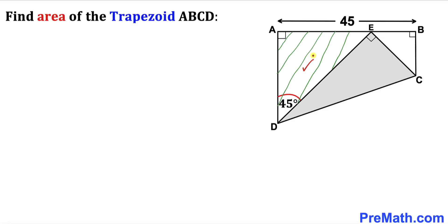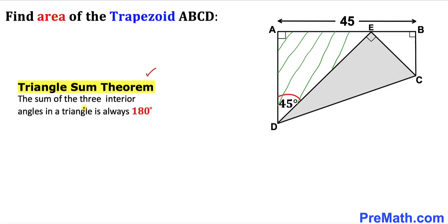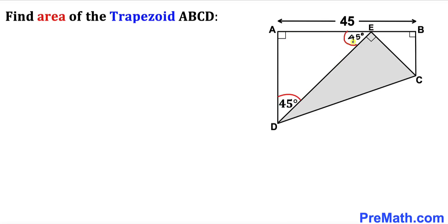Our first step is to focus on right triangle ADE. Recalling the triangle sum theorem — the sum of the three interior angles in a triangle is always 180 degrees — since one angle is 90 degrees and angle ADE is 45 degrees, the third angle must also be 45 degrees. The straight angle at E is 180 degrees, so the remaining angle is 45 degrees.